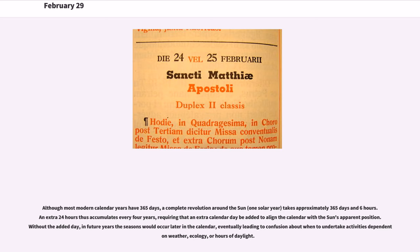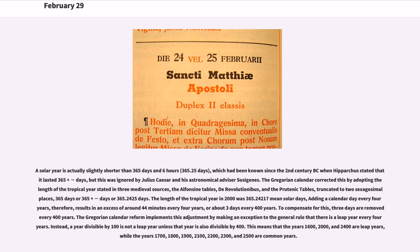A solar year is actually slightly shorter than 365 days and six hours — 365.25 days — which had been known since the 2nd century BC when Hipparchus stated it lasted 365 plus one quarter days, but this was ignored by Julius Caesar and his astronomical advisor Sosigenes.